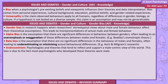An example of alpha bias is Bowlby's Monotrophic Theory. Beta bias is the assumption there are no significant differences in the behaviour of males and females, often leading to underestimating or minimising actual behavioural differences — for example, Milgram's research. Androcentrism refers to psychologists and theories that tend to reflect and support a male-centric view of the world, largely because most psychologists who developed these theories were male.